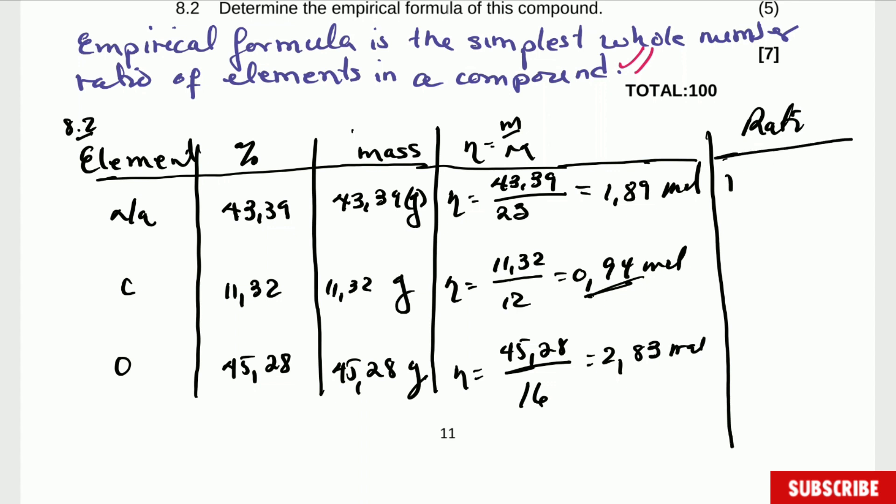There we go. So it's 1.89 divided by 0.94 and you get that this one is 2. Here it is going to be 1, 0.94 divided by 0.94 is equal to 1. And the last one, 2.83 divided by 0.94 will give you 3.